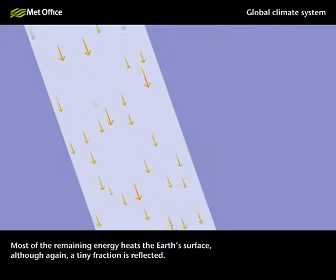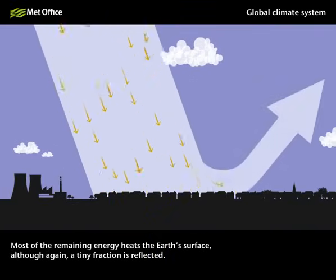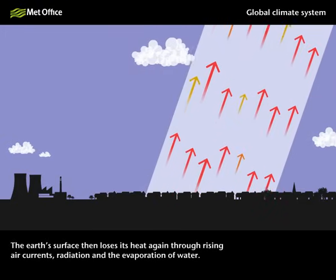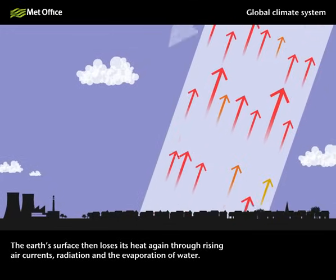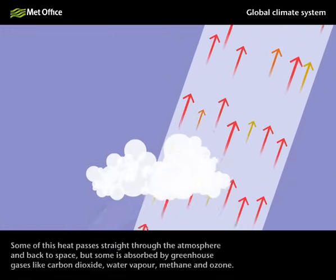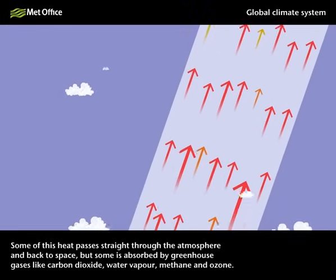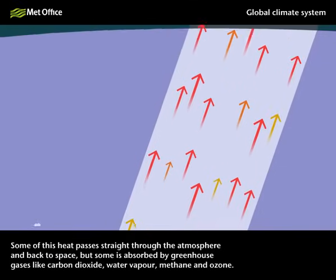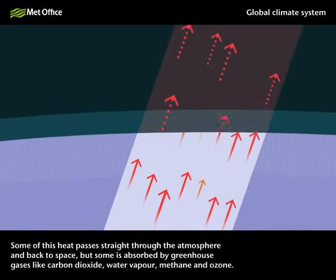Most of the remaining energy heats the Earth's surface, although a tiny fraction is reflected. The Earth's surface then loses its heat again through rising air currents, radiation, and the evaporation of water. Some of this heat passes straight through the atmosphere and back to space, but some is absorbed by greenhouse gases like carbon dioxide, water vapour, methane, and ozone.